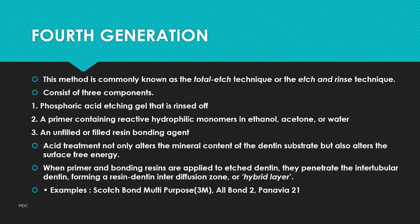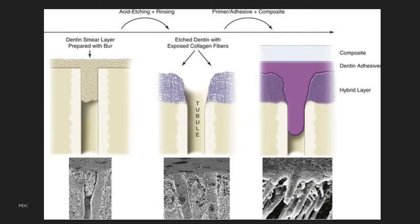Fourth generation, commonly known as the total etch technique or etch-and-rinse technique, consists of three components: a phosphoric acid etching gel that is rinsed off, a primer containing a reactive hydrophilic monomer in ethanol/acetone or water, and an unfilled or filled resin dentin bonding agent. The acid treatment alters the mineral content and surface free energy of the dentin substrate. When primer and bonding agents are applied to the etched dentin, they penetrate the inter-tubular dentin forming a resin-dentin interdiffusion zone, or hybrid layer. Example: Scotchbond.